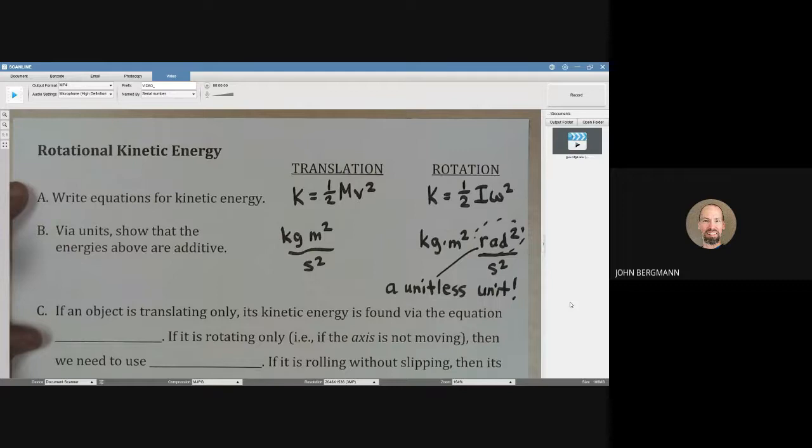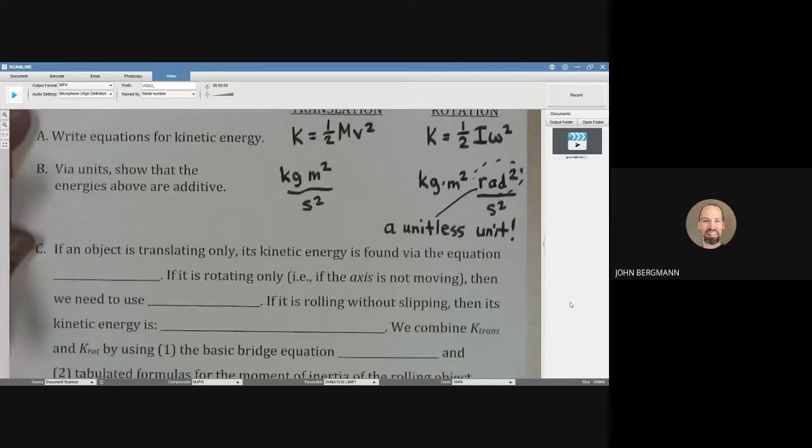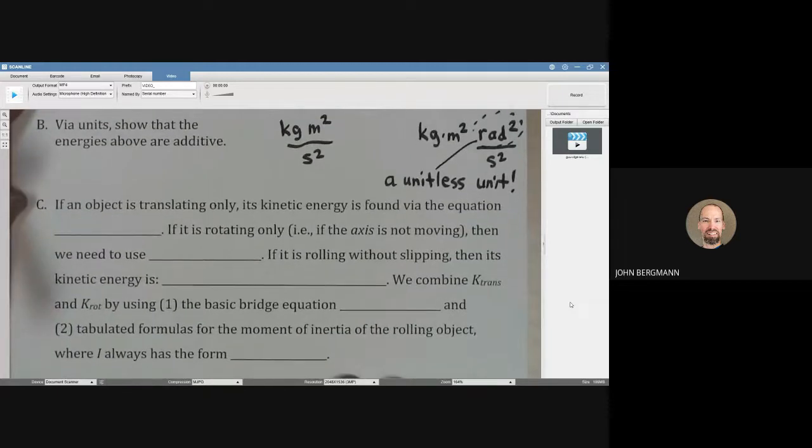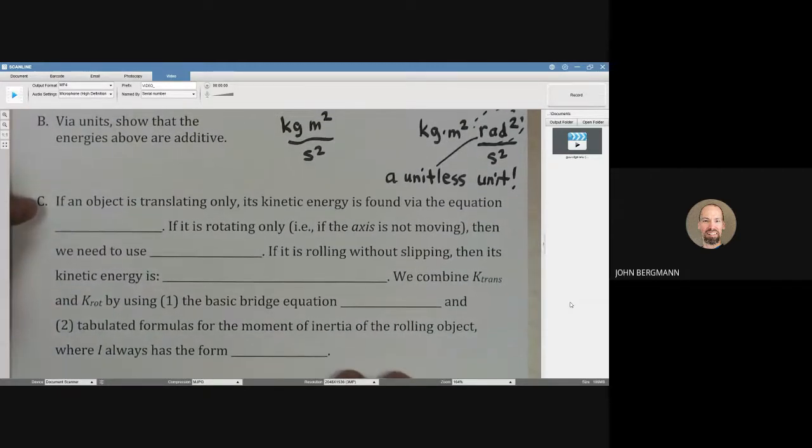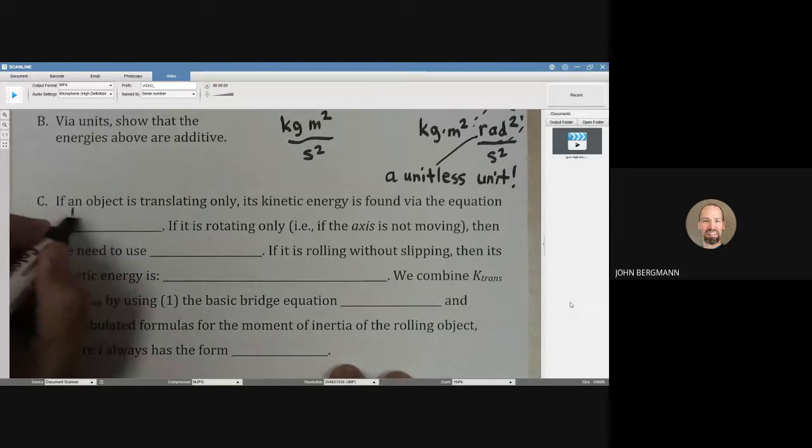What that means is these two energies are additive. You can add them up and get a single answer. If an object is translating only, its kinetic energy is found via the equation one-half mv squared.